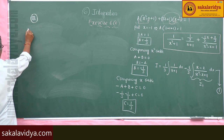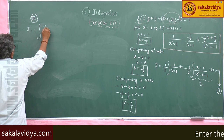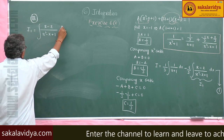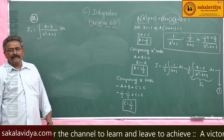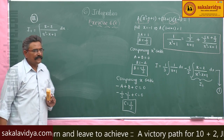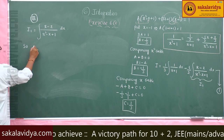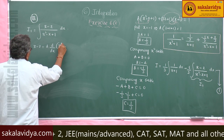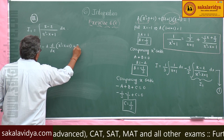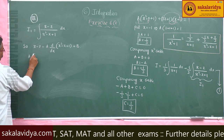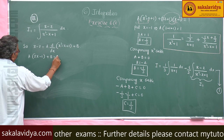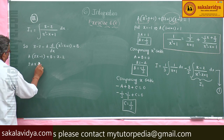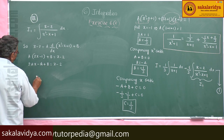Now I₁ equals integral x minus 2 by x square minus x plus 1 dx. This is in the form of integral px plus q by ax square plus bx plus c dx. We write x minus 2 equal to A into d by dx of x square minus x plus 1 plus B, so A of 2x minus 1 plus B equals x minus 2, giving 2Ax minus A plus B equals x minus 2.